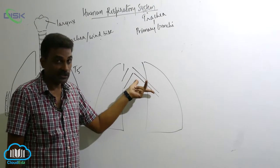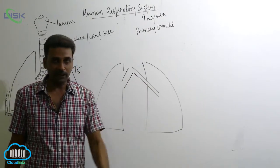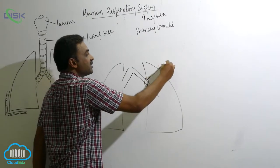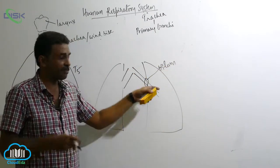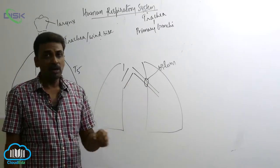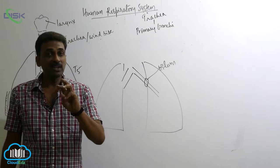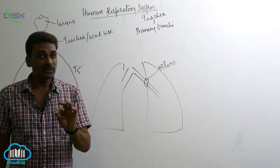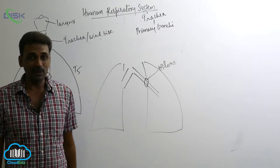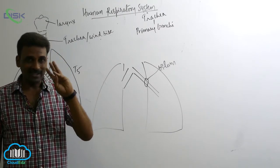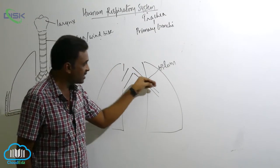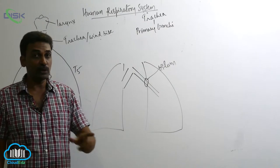The left primary bronchus is slightly narrower at the region of the hilum. The hilum is a depression through which the primary bronchus, arteries, veins, lymph vessels, and nerves all enter into the lungs.